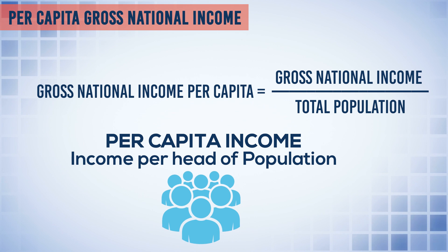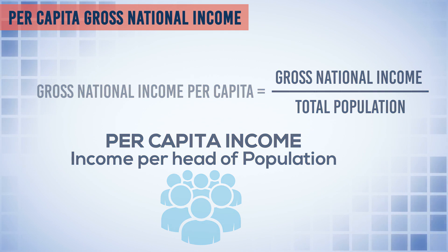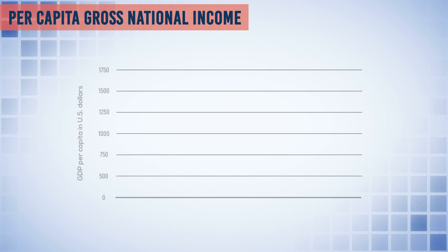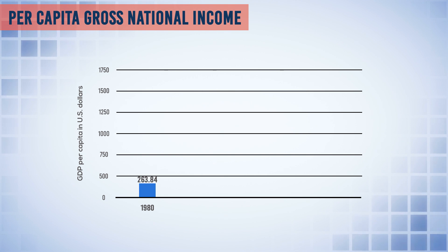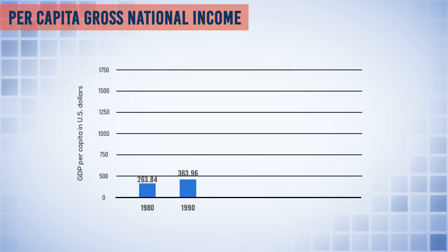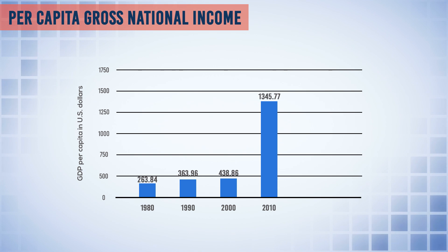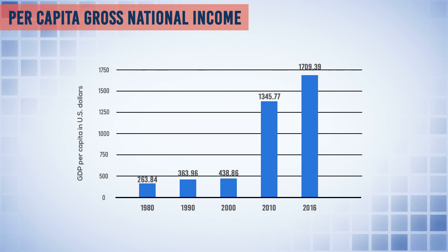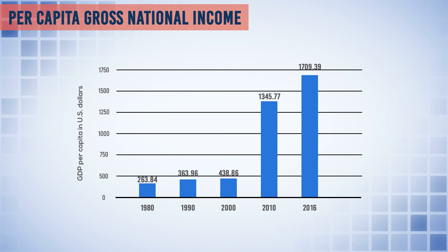In many countries like India, official population data is taken once in 10 or 15 years, so it is not accurate for every year. From the statistics available, India's per capita income was $263 in 1980, gradually increasing to $363 by 1990, $438 by 2000, and then grew sharply to $1,345 per person per annum in 2010 — mainly due to growth in the software and banking industry. In 2016, it stands at $1,709 per person per annum. A snapshot of these details is shown here — you can pause the video to look at it.